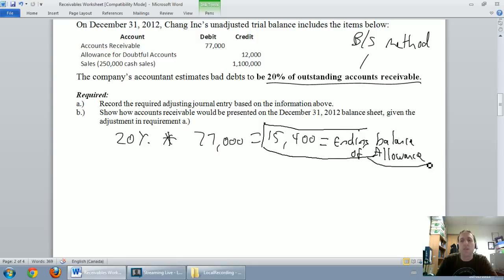So this is the ending balance of my allowance for doubtful accounts, and it's a credit. Maybe I'll put that in brackets. The allowance is a contra-asset account. Its natural state of existence is it's a credit account. So I've said my ending balance of my allowance has got to be $15,400. Let's take a look at our allowance.